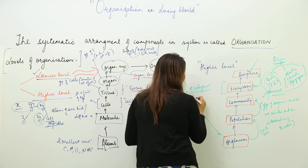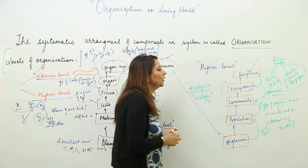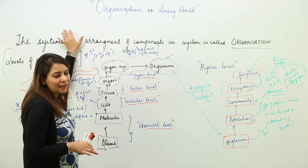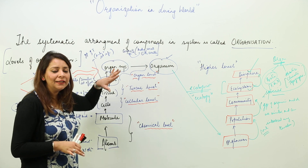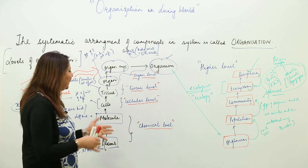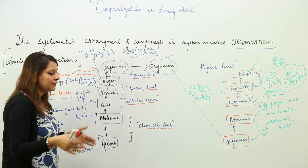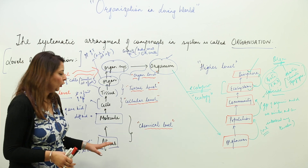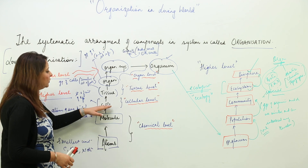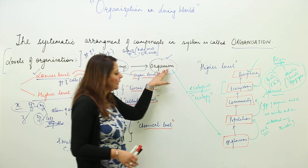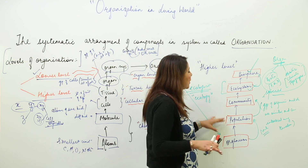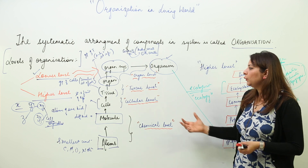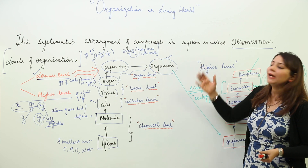So organization is the systematic arrangement of components in a system in a proper hierarchy — from the lowest to the highest level. The full hierarchy is: atom, molecule, cell, tissue, organ, organ system, organism, population (with species mentioned here), community, ecosystem, and the highest level — biosphere. You just need to know what each level is and where it is placed in the hierarchy.